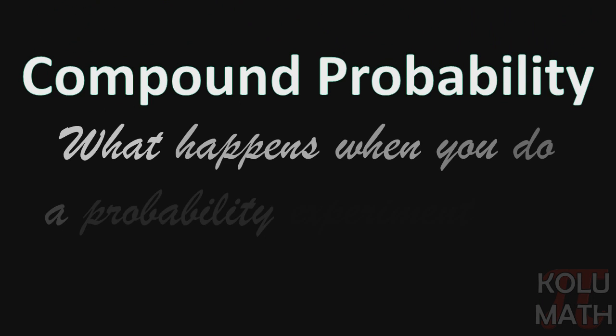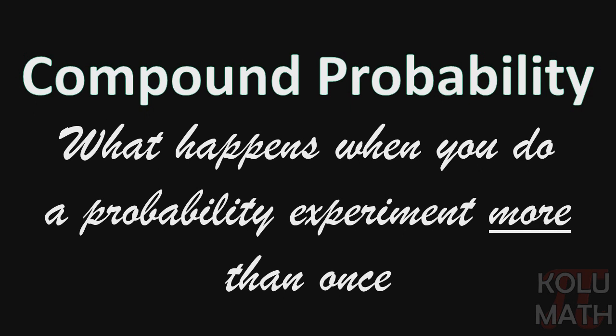And compound probability is what happens when you do a probability experiment more than once. Let's take a look at that in an example.